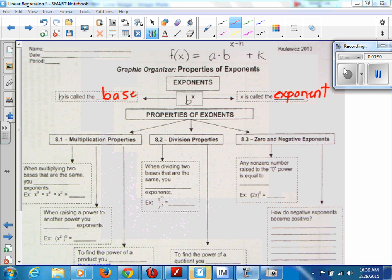So properties of exponents, there's three properties: multiplication, division, zero and negative exponents. When multiplying two bases that are the same,